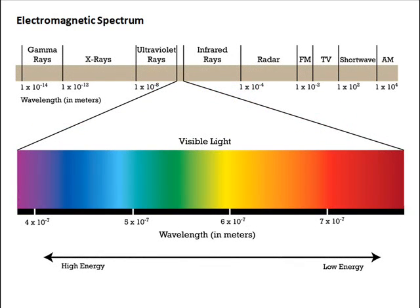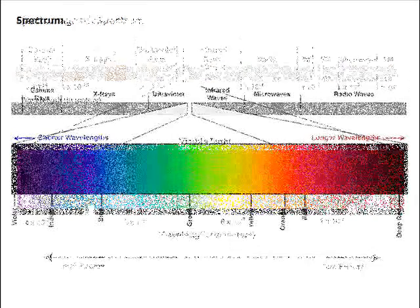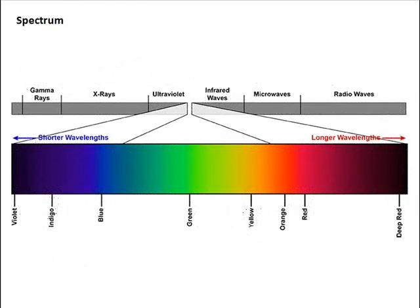Electromagnetic spectrum is the categorization of solar radiation. It includes the entire range of radiant energies or wave frequencies, from the longest to the shortest wavelengths.